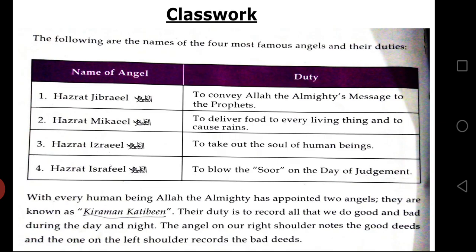Now turn the leaf and come to page number 20. Write down classwork in the center at the top of the page. The following are the names of the four most famous angels and their duties. You remember in our learning objective today we said we should be able to tell four names of famous angels and their duties — what they do, what Allah the Almighty ordered them to do.